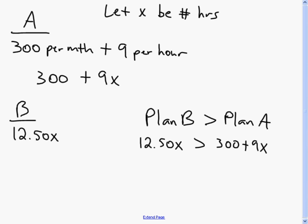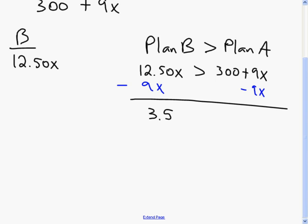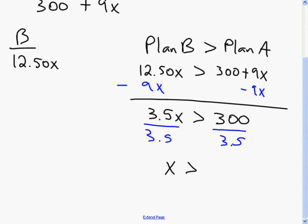Subtracting 9x from both sides gives 3.50x is greater than 300. Dividing both sides by 3.50: since we divide by a positive, nothing happens to the inequality. Taking 300 divided by 3.50 gives approximately 85.7. So x is greater than 85.7.